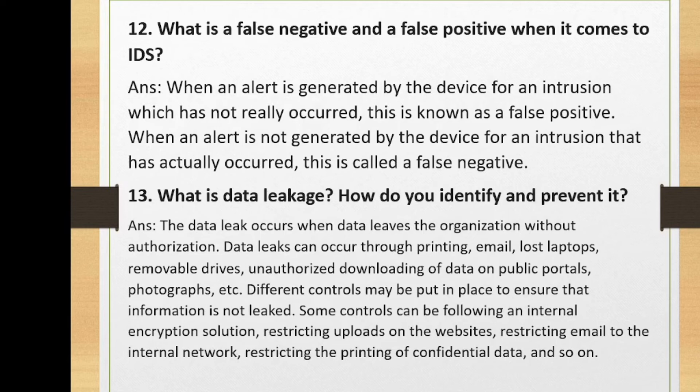What is data leakage and how do you identify and prevent it? Data leakage occurs when data leaves the organization without authorization. Leaks can occur through printing, email, lost laptops, removable drives, unauthorized downloading, photographs, screenshots, etc. Control measures include an internal encryption solution, restricting uploads on websites, restricting emails to the internal network, and restricting printing of confidential data.